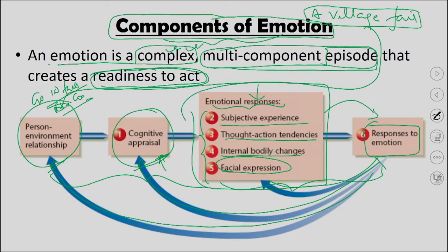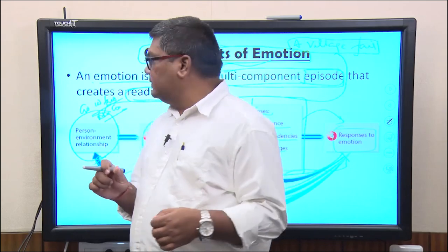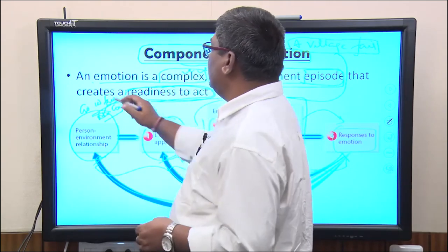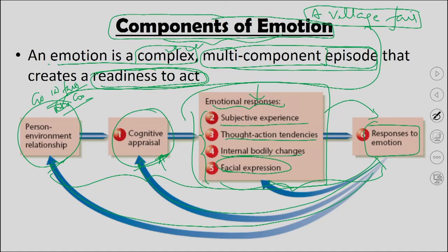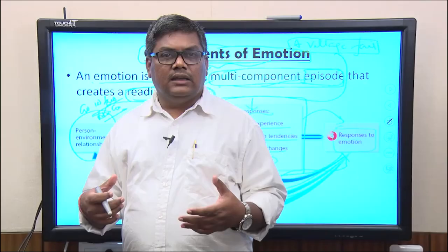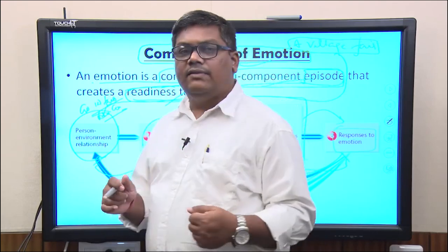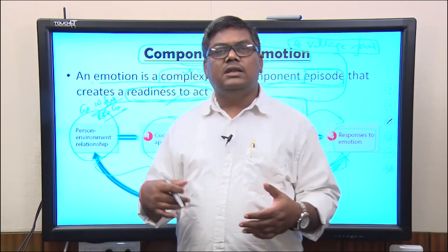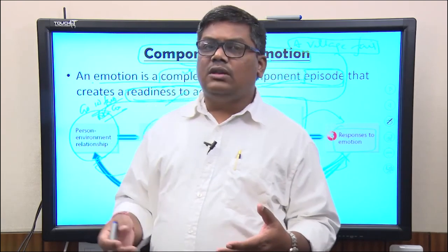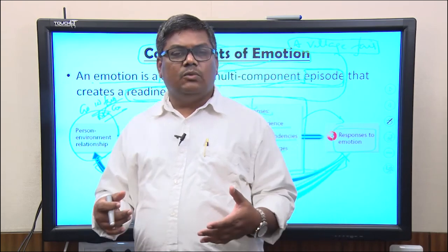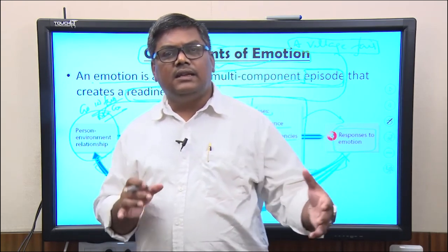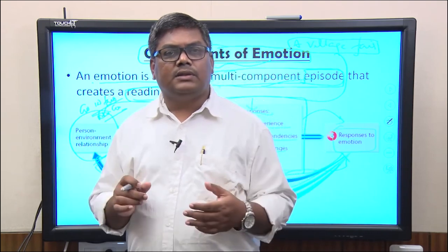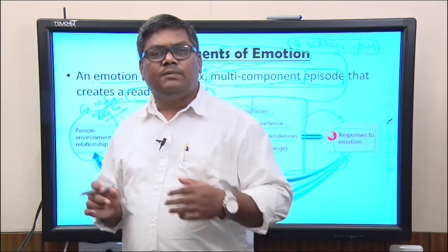What we are going to do today is continue from here and understand the whole multi-component process of emotion — how these processes integrate together to generate emotion and how emotions actually shape behavior. Emotion is a complex multi-component episode that makes you act, so behavior is controlled by emotion. It generates through a cascade of processes, one following the other, leading to a final response.